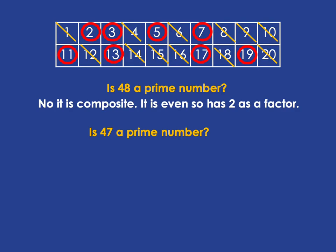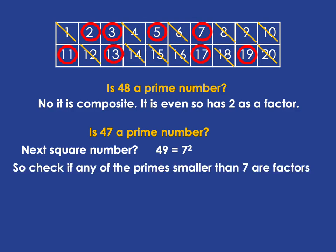Remember that factors always occur in pairs: a small factor pairs with a large one. So we only have to check as far as the square root of 47. The next square number after 47 is 49, which is 7 squared, so we only need to check up to 7. And we don't need to check every number — only the prime numbers — because if 2 doesn't divide into 47, then 4 won't either.